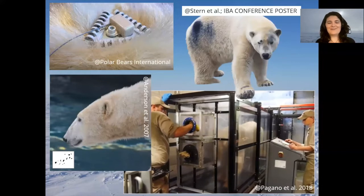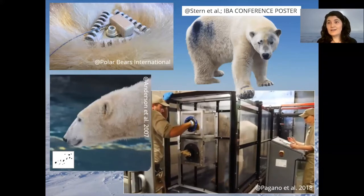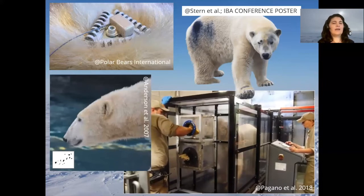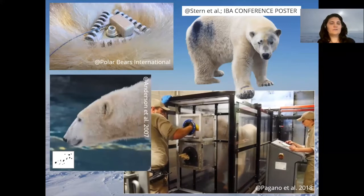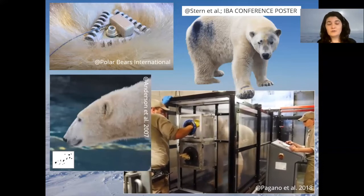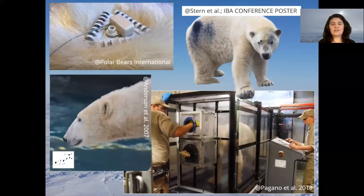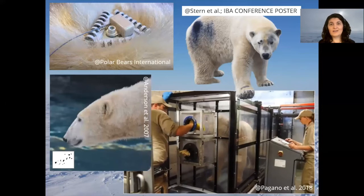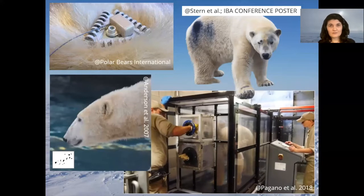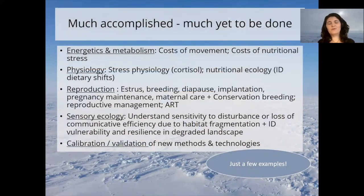Very recently, Jennifer Stern and co-authors have a conference poster on polar bear hair, which is widely used for studies in the wild of genetics, diet, hormones, and pollution load. However, an accurate interpretation of hair data actually requires an understanding of the time frame of hair growth, and this is what Jennifer is working on right now with the aid of bears in zoos. Those are just a couple of examples — there are so many more because we have a lot more to learn. Zoos play a fundamental role in conservation-relevant research moving forward.